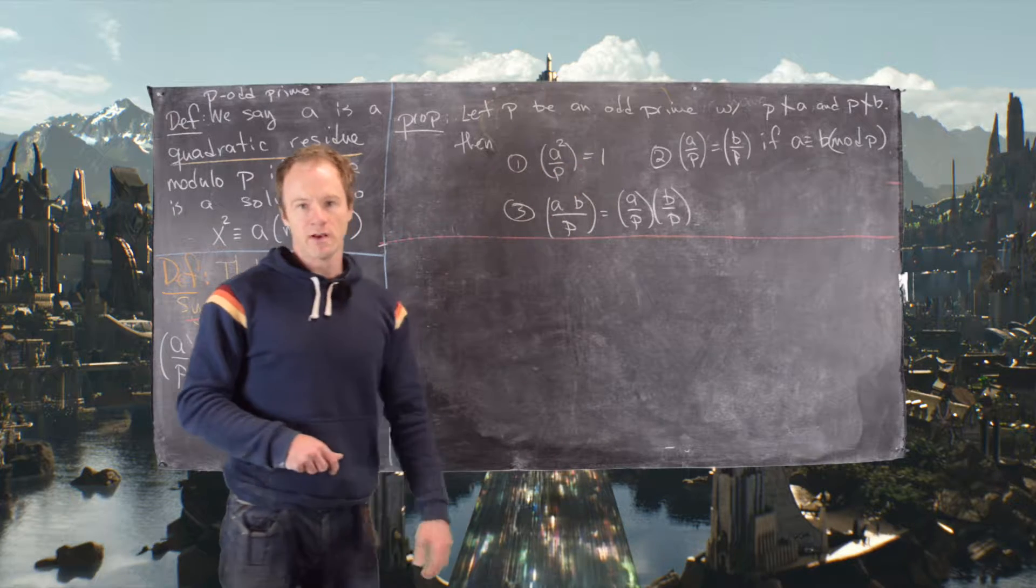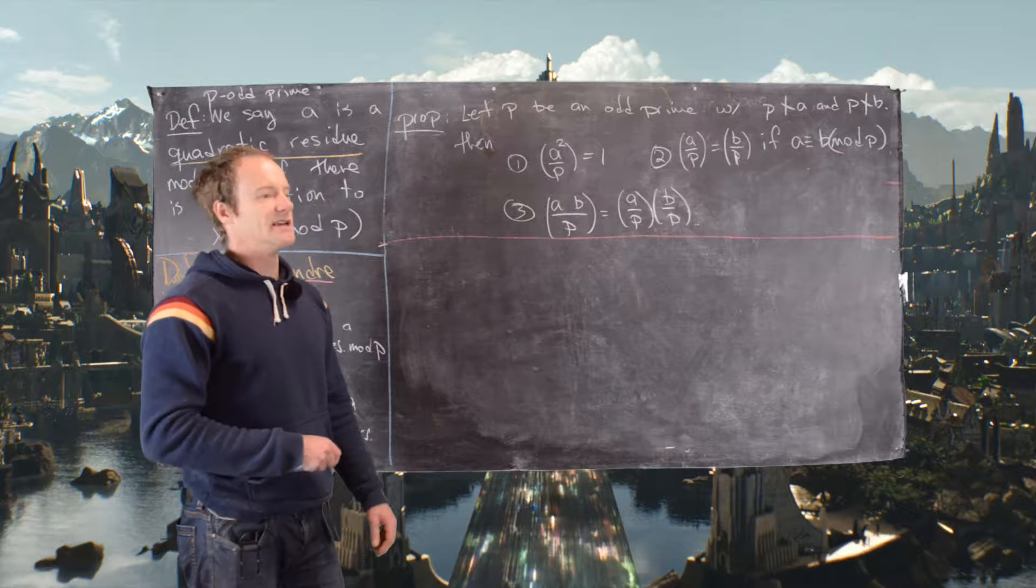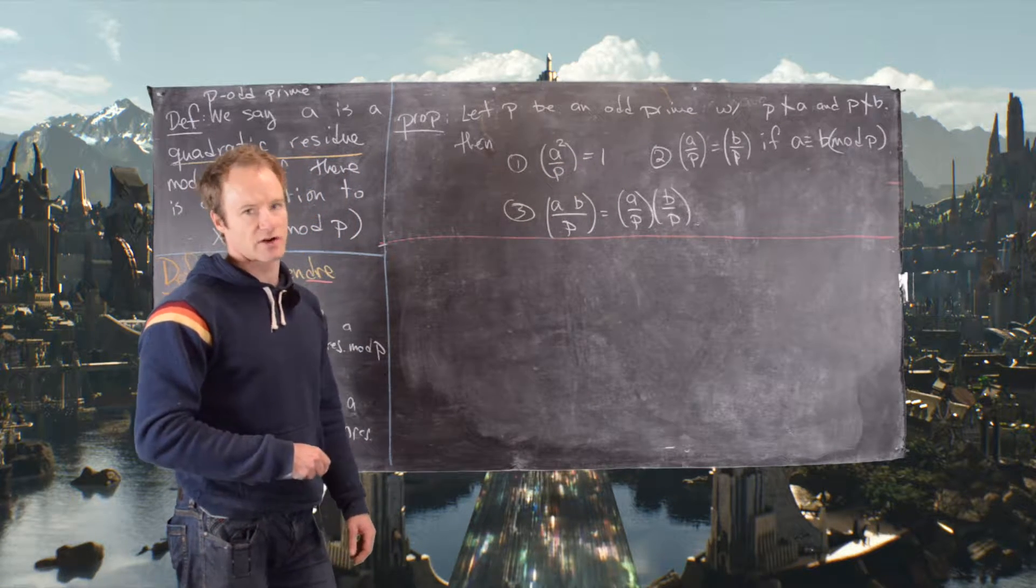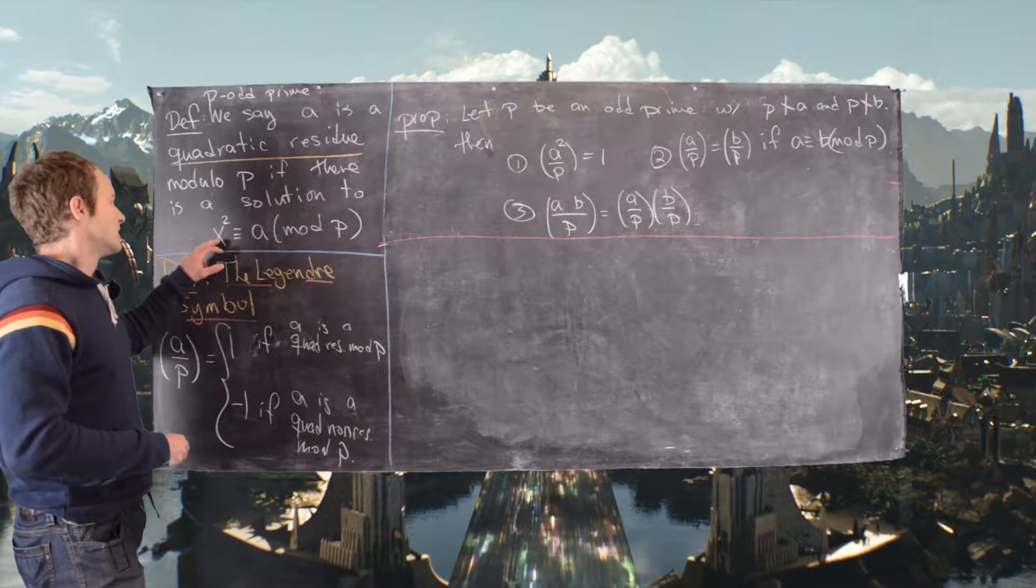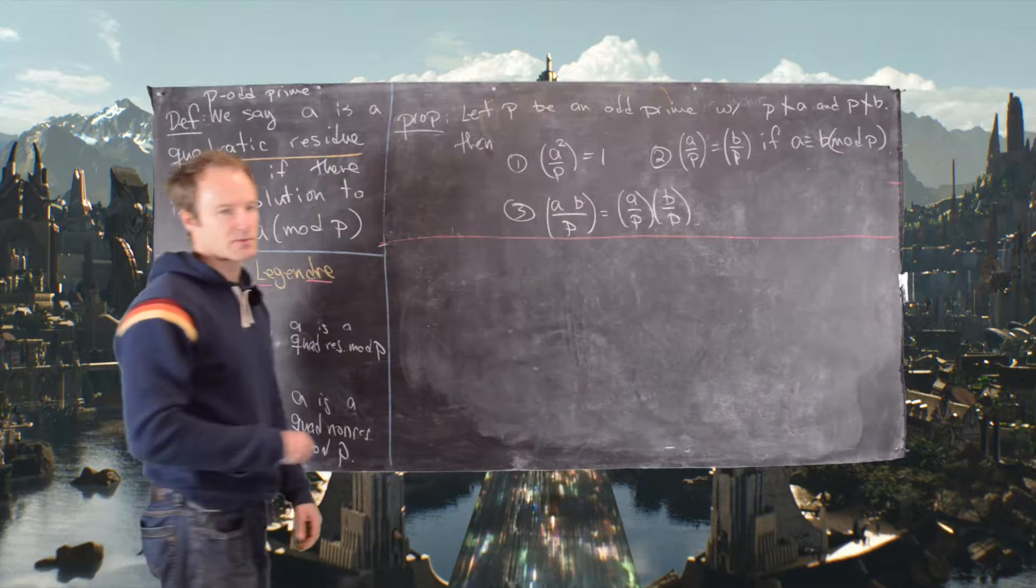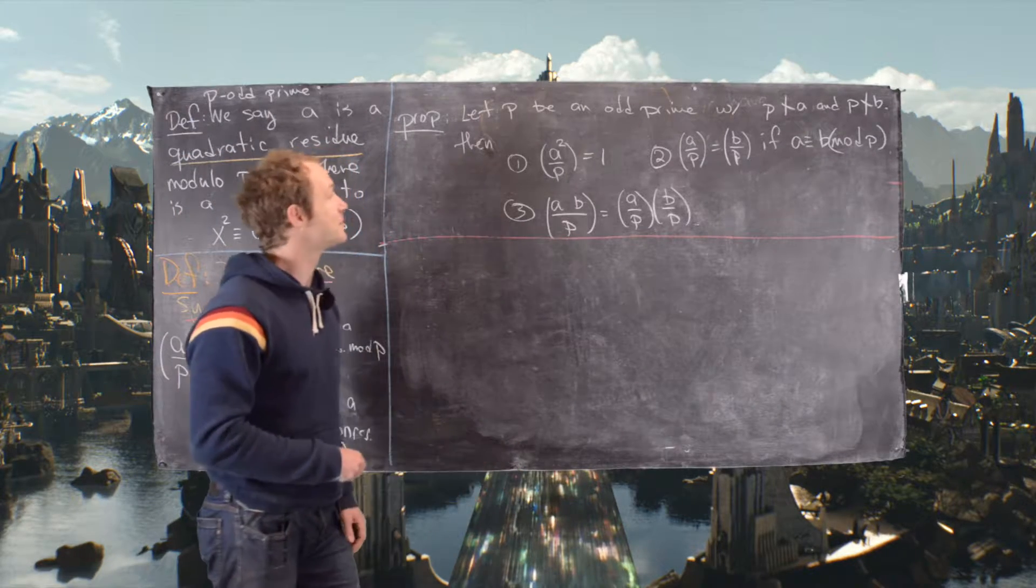a squared by p is 1. So what that says is that a squared is a quadratic residue mod p. That's totally clear because we obviously would have a solution for x squared is congruent to a squared mod p and that solution would be a.